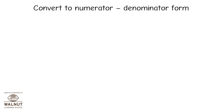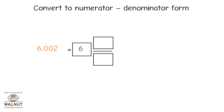Convert to numerator-denominator form. We first write this as a mixed fraction. Write the integer part. Here, there are three digits after the decimal, so we write 1 with three zeros in the denominator — that is 1000. The numerator stays as it is. Write that. There, it is 2. We write the final answer. We can even directly put the same denominator below the whole number.